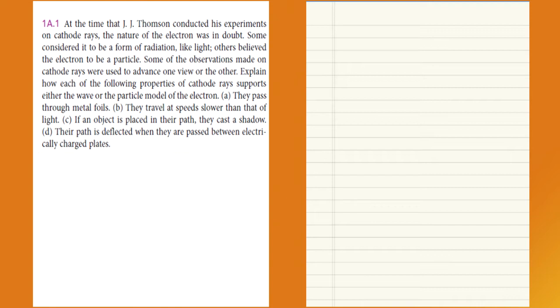At the time that Thomson conducted his experiments on cathode rays, the nature of the electron was in doubt. Some considered it to be a form of radiation like light, others believed the electron to be a particle. Other observations made on cathode rays were used to advance one view or the other. Explain how each of the following properties of cathode rays supports either the wave or particle model of the electron.